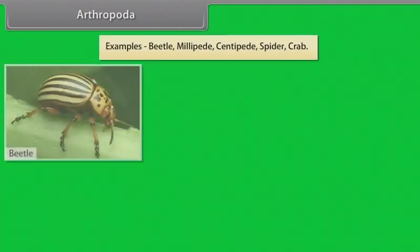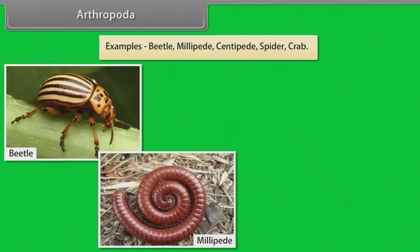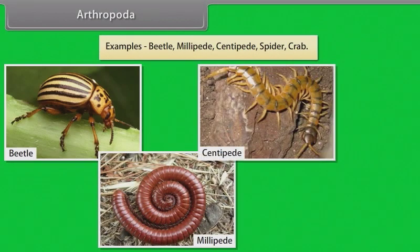Examples of Arthropoda: Beetle, Millipede, Centipede, Spider and Crab.